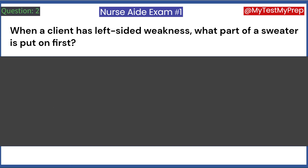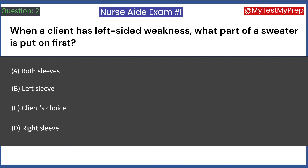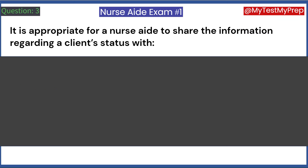When a client has left-sided weakness, what part of a sweater is put on first? A. Both sleeves. B. Left sleeve. C. Client's choice. D. Right sleeve. Answer: B. Left sleeve.